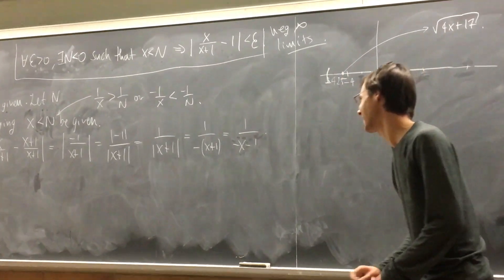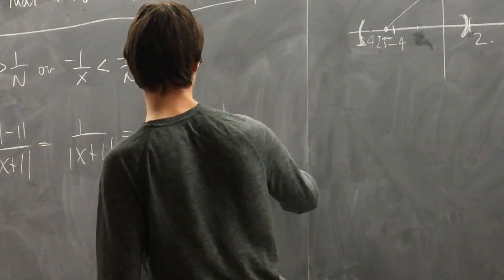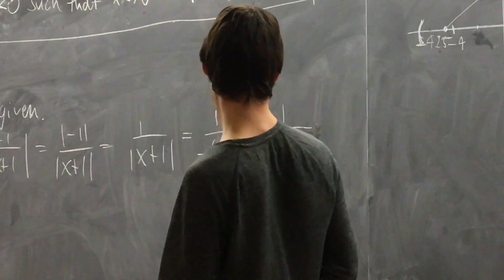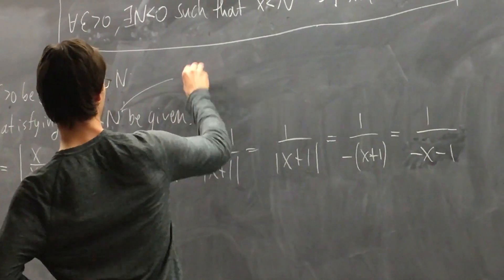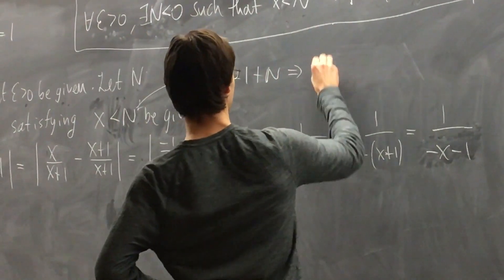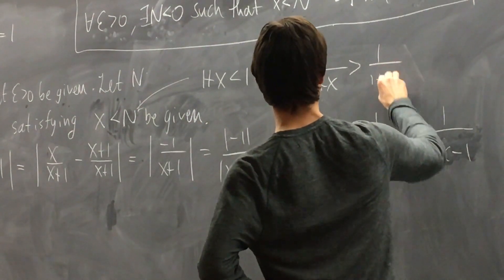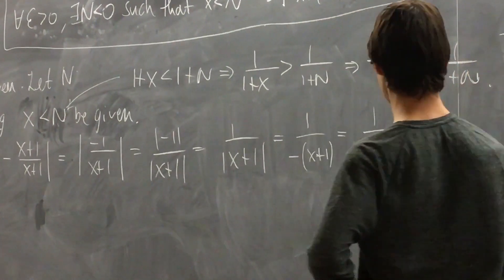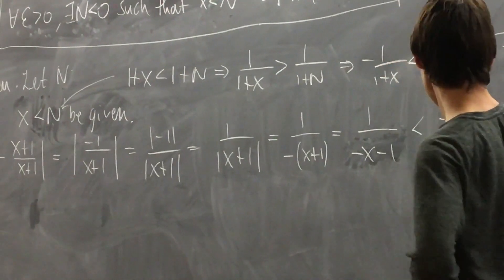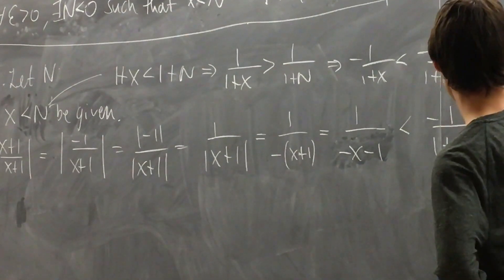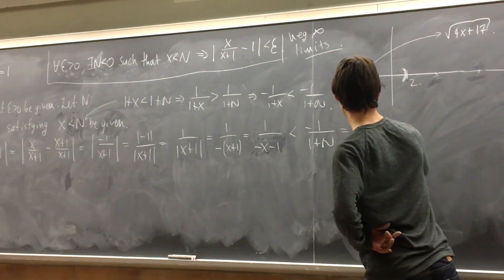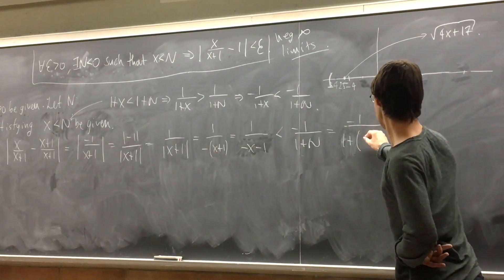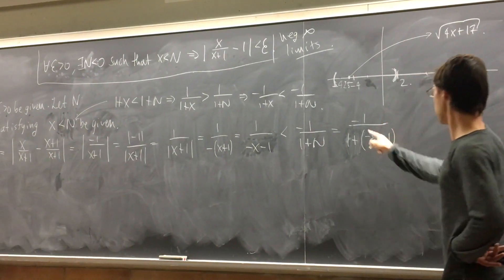The reverse triangle inequality would apply here: rewrite x+1 as 1 − (−x), then apply the inequality to get a lower bound on |x+1|, and since the 1 is positive you could drop it. This would be the cleaner method for this problem. We'll probably see another example where the reverse triangle inequality is used.